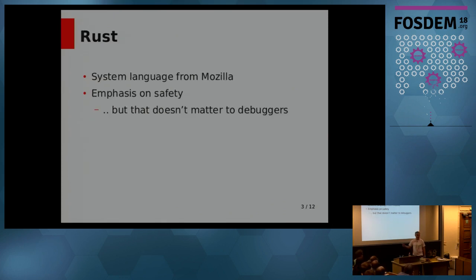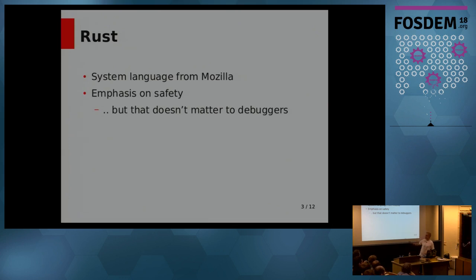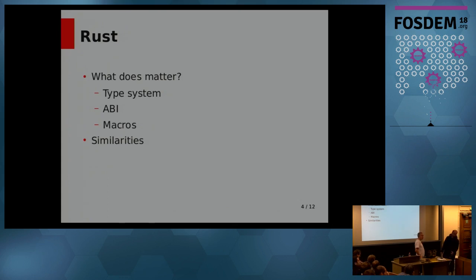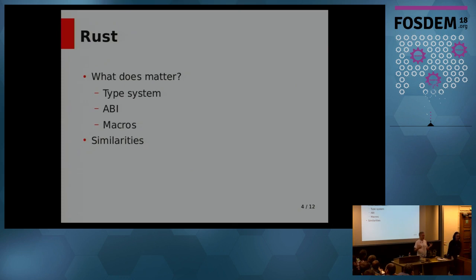Rust is a system language from Mozilla with an emphasis on safety. I personally feel like it's what the programming world needs. But this emphasis on safety doesn't matter at all to debuggers — it's not important from the debugger view. What does matter to debuggers is the type system, the ABI, things like macros, ways that the source gets transformed that developers want to understand while they're debugging. And all of these have problems when you get to Dwarf and teaching debuggers how to debug Rust.